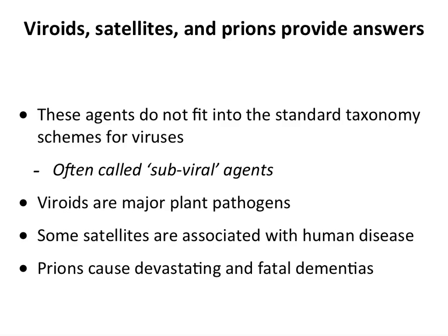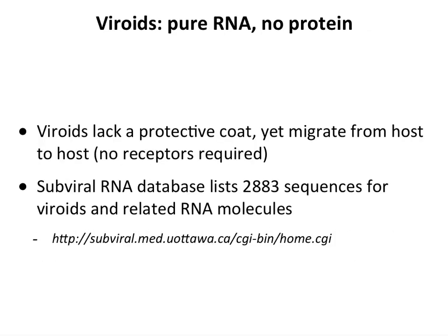As we examine these, we'll answer these questions — they don't fit into the standard taxonomy we've established for viruses, so we often call them sub-viral agents. Viroids are major plant pathogens. Satellites are mostly associated with plants but some with human disease. Prions cause some very serious human and other animal diseases. We'll start first with viroids.